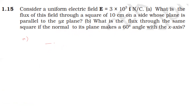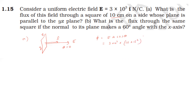For the first case, the electric flux formula is Φ = EA cos θ. Here E = 3×10³, area A = (10×10⁻²)² = 10⁻² m², and θ = 0°, so cos 0 = 1. Thus Φ = 3×10³ × 10⁻² × 1 = 30 N·m²/C.